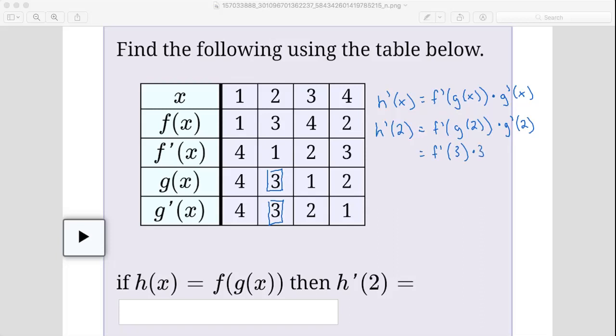Next we find f prime of 3, so we find f prime and then 3, we find where those two intersect and that is at 2. So this would be f prime of 3 is 2, and 2 times 3 is 6.